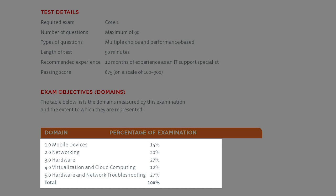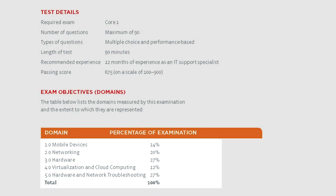All CompTIA exams are broken down into domains — the level 1 objectives that give you an idea of the big areas they're going to be covering. They also give you percentages. Domain 1.0 is mobile devices at 14%. Domain 2.0 is networking at 20%. Domain 3.0 is hardware at 27%. Virtualization and cloud computing at 12%, and hardware and network troubleshooting at 27%.